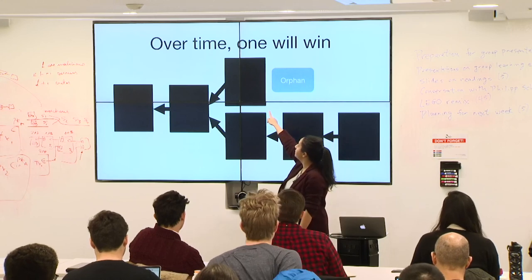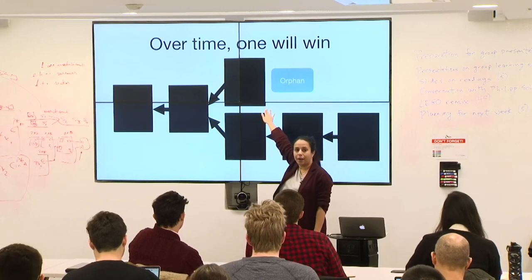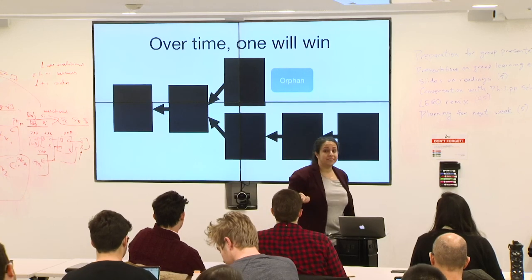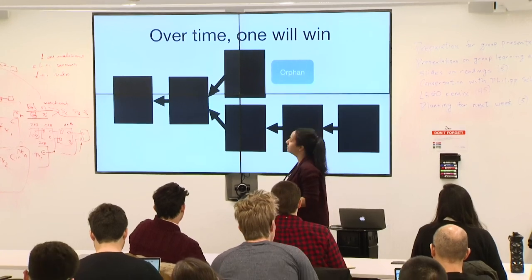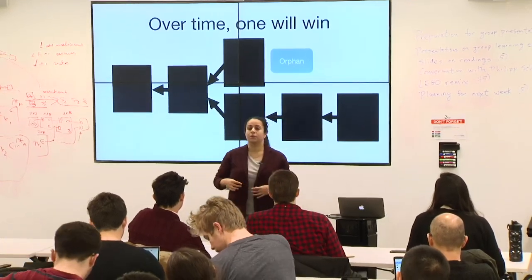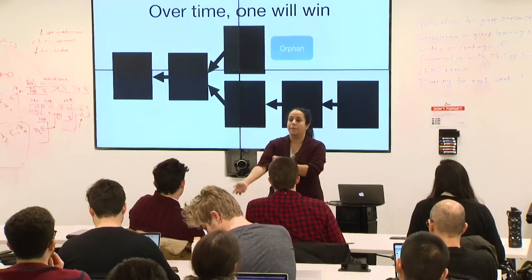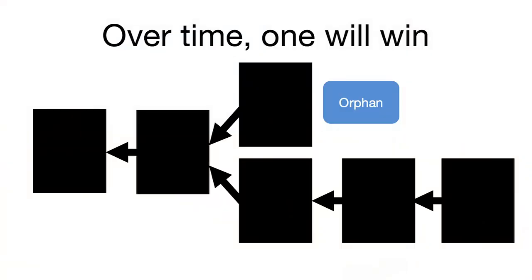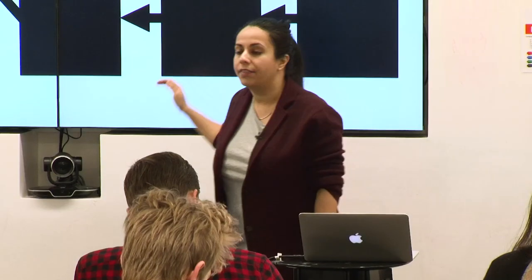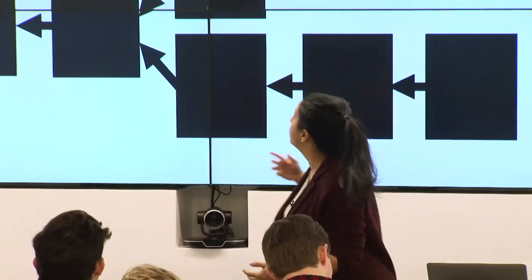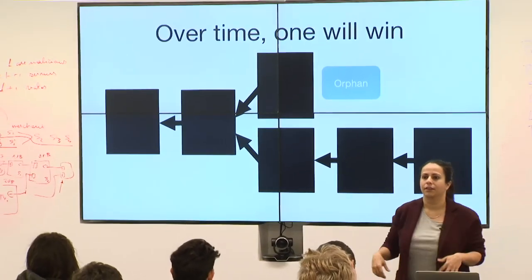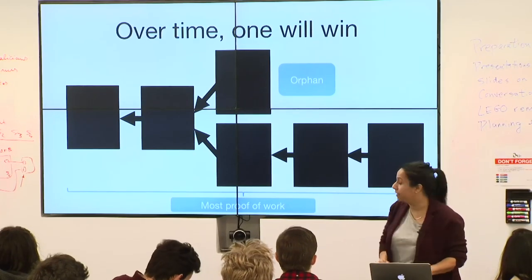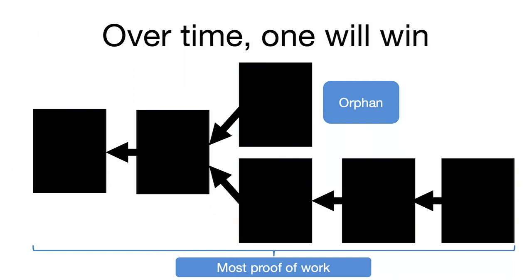What do we do with the block that loses? It's basically abandoned. It exists, it points into the chain, but in Bitcoin it's meaningless. Every transaction that was in that block is not considered to have happened — those transactions need to be replayed on the chain that ends up being the longest chain. We call that block an orphan. We pick the side of the chain that ends up having the most proof of work.